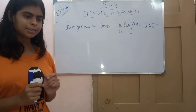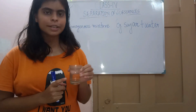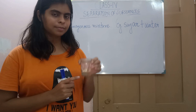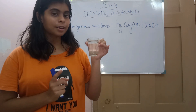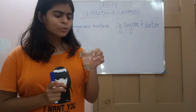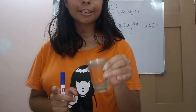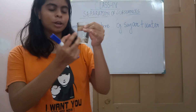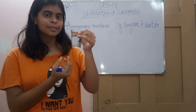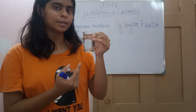Let's see, I have taken an example of sugar and water. What do you see? It is a colorless solution. Can you see any sugar particles in it? Can you figure out that sugar particles are present here and here? Sugar particles have disappeared.